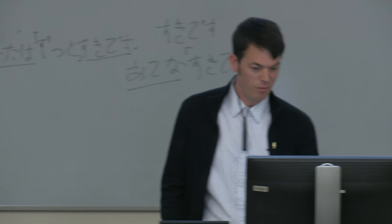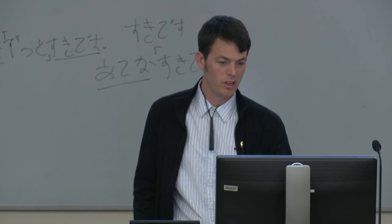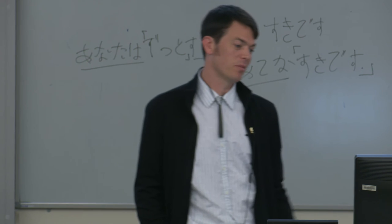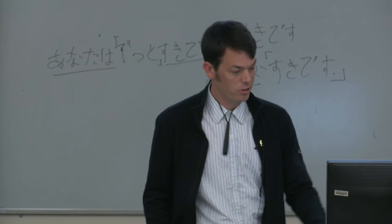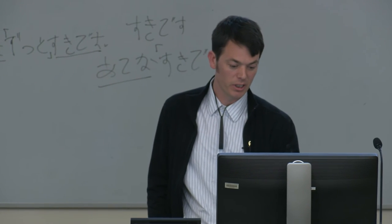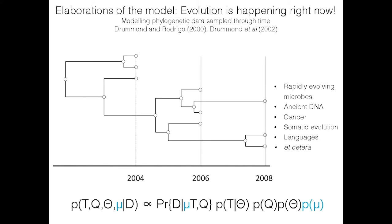This is the basic inference machinery we use, and what I've done over the last 15 years is develop software and mathematical models that allow you to efficiently estimate this posterior distribution with increasingly elaborate modeling approaches. One of the first elaborations — really where I started — was introducing the concept that you're not just interested in historical processes but in the ongoing process of evolution. This is particularly the case for rapidly evolving viruses, but also for ancient DNA, cancer, and languages. We have genealogical relationships, and the timing of ancestral events is intermingled with the timing of sampling.